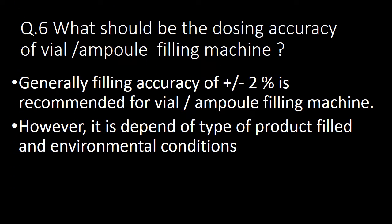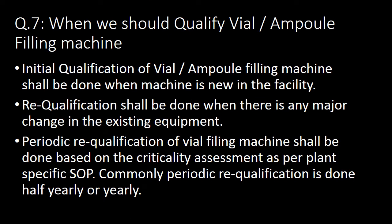Next question: what should be the dosing accuracy of a vial or ampoule filling machine? Generally, a filling accuracy of plus or minus 2% is recommended for vial or ampoule filling machines. However, it depends on the type of product filled and environmental conditions.